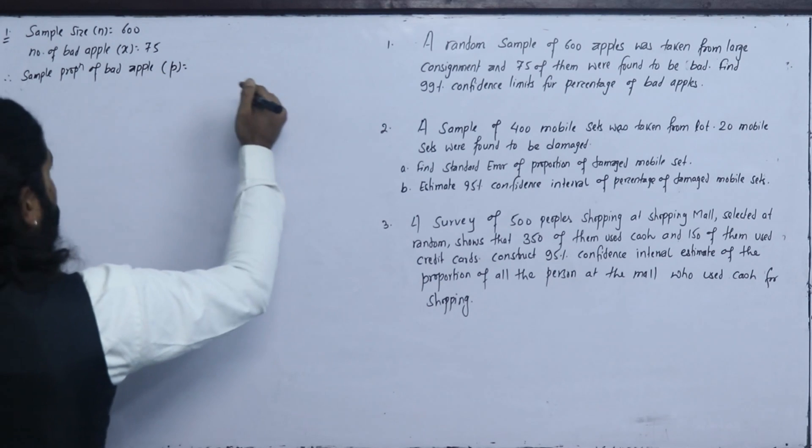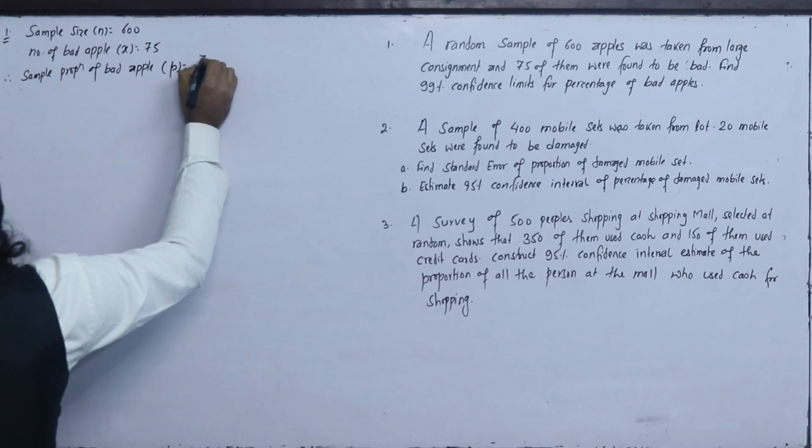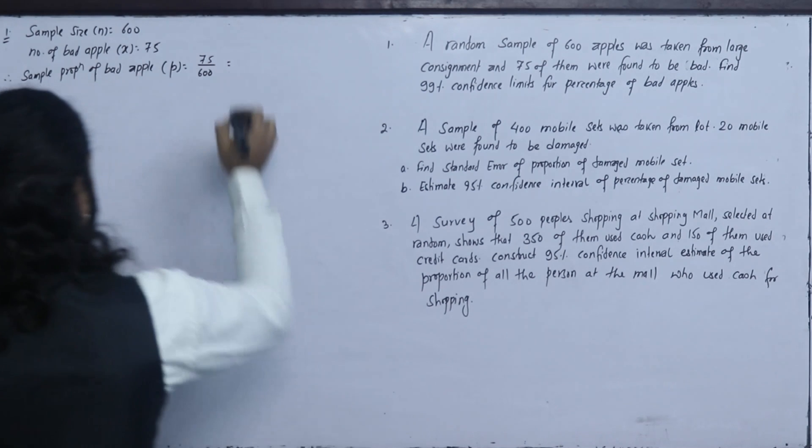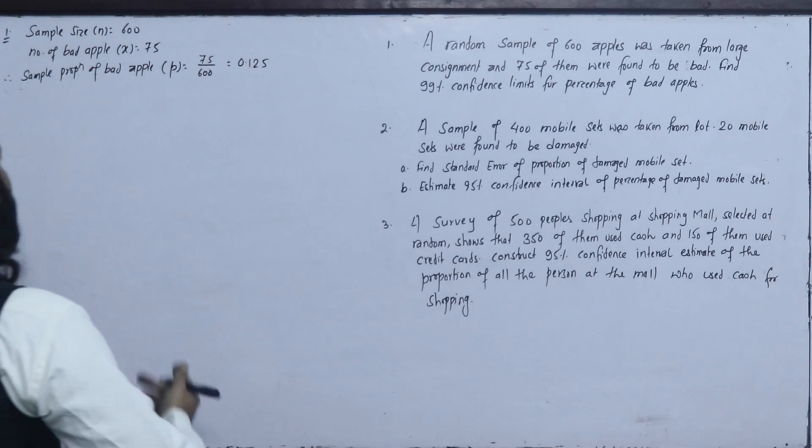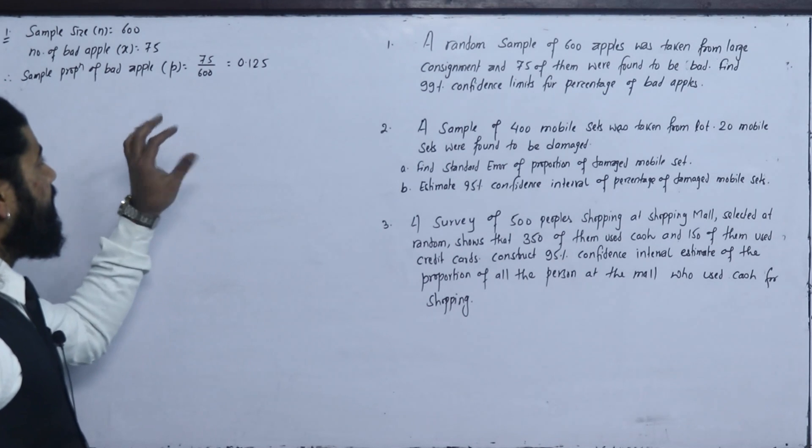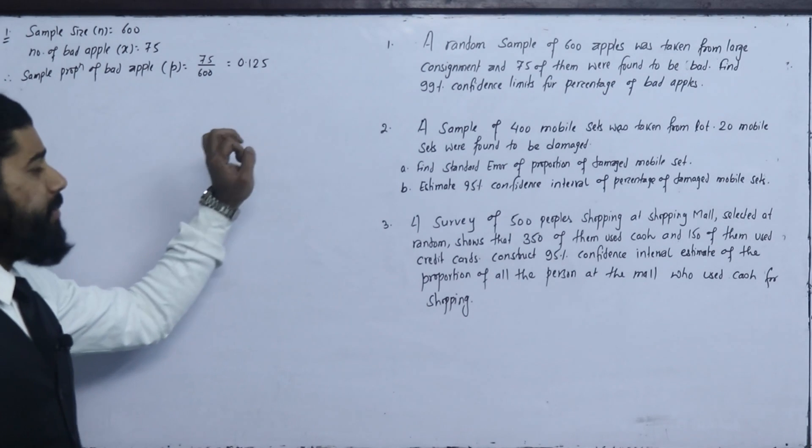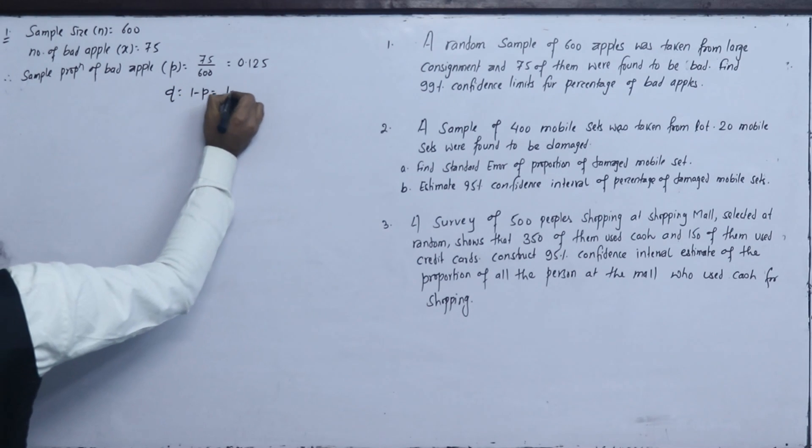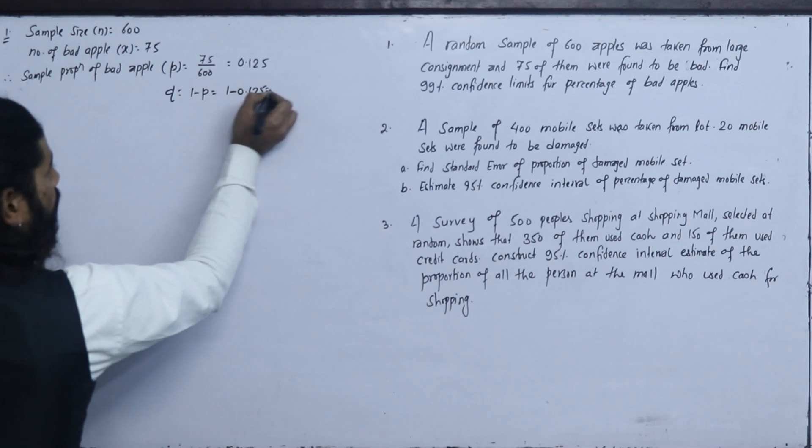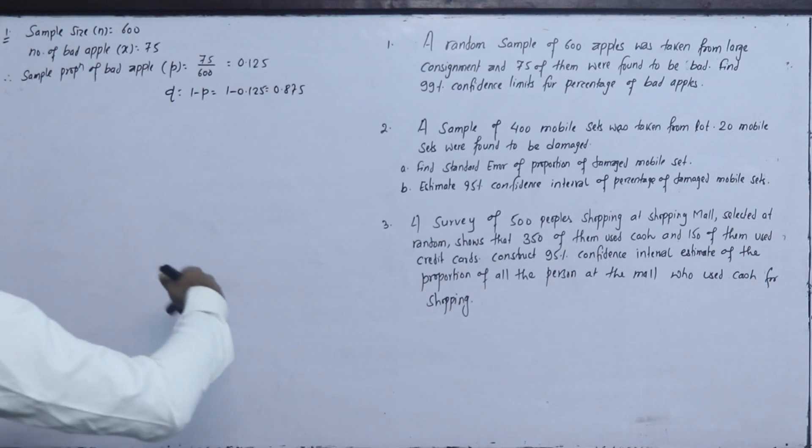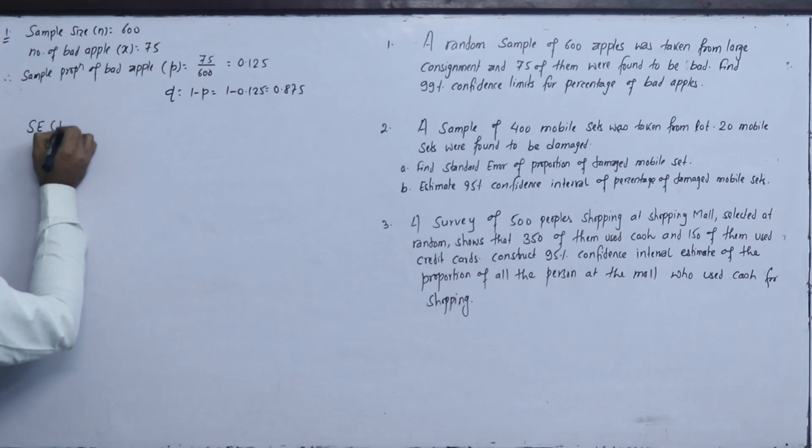This is 75 divided by 600, this is 0.125. The sample proportion of bad apple in the sample, there is 12.5% bad apple. q is 1 minus p, 1 minus 0.125 equals 0.875. Small p, small q values.